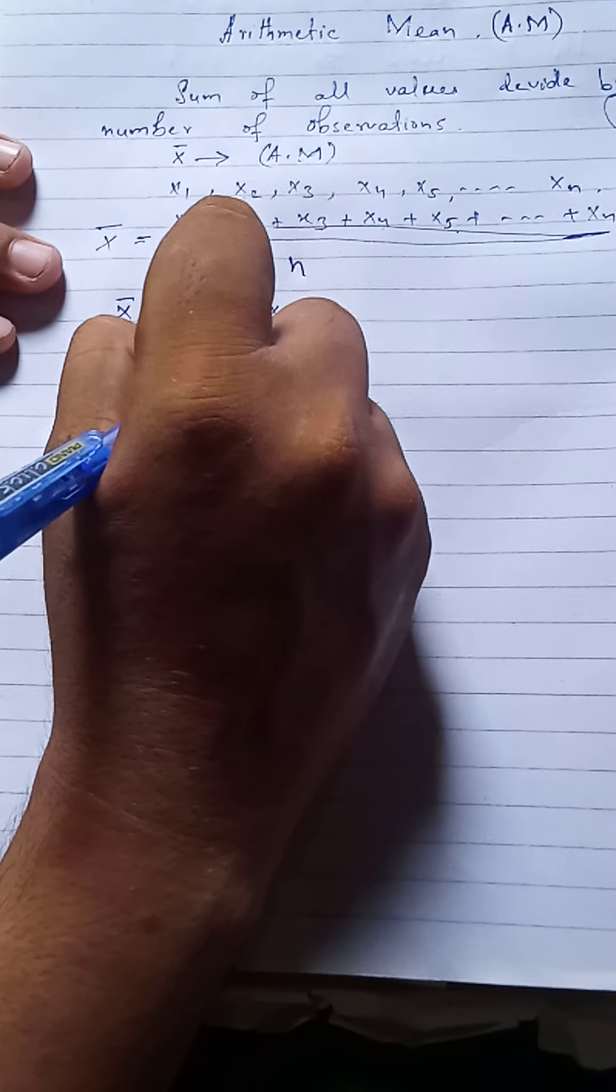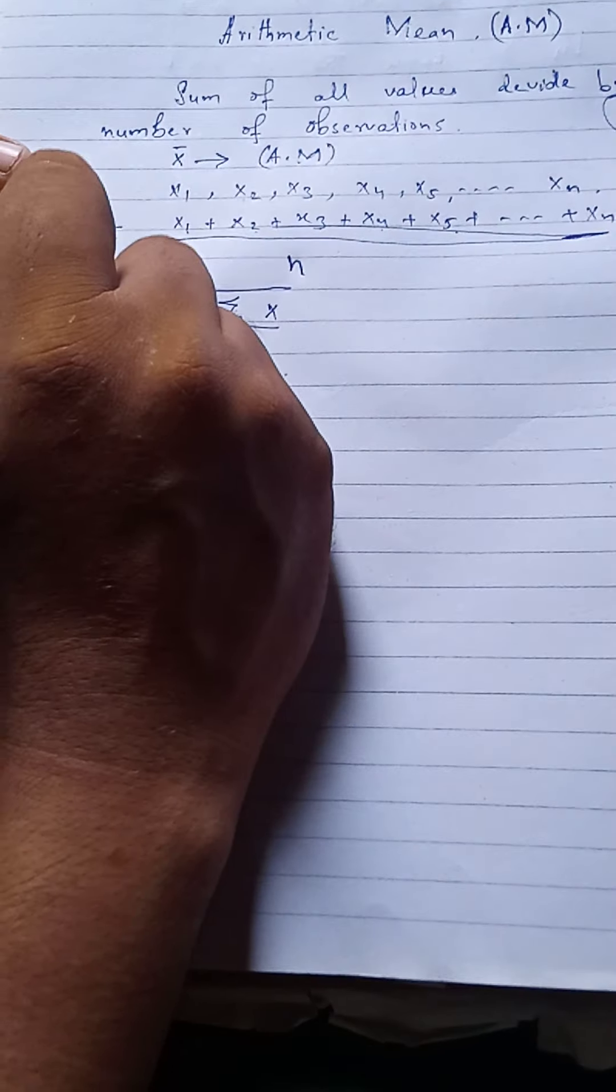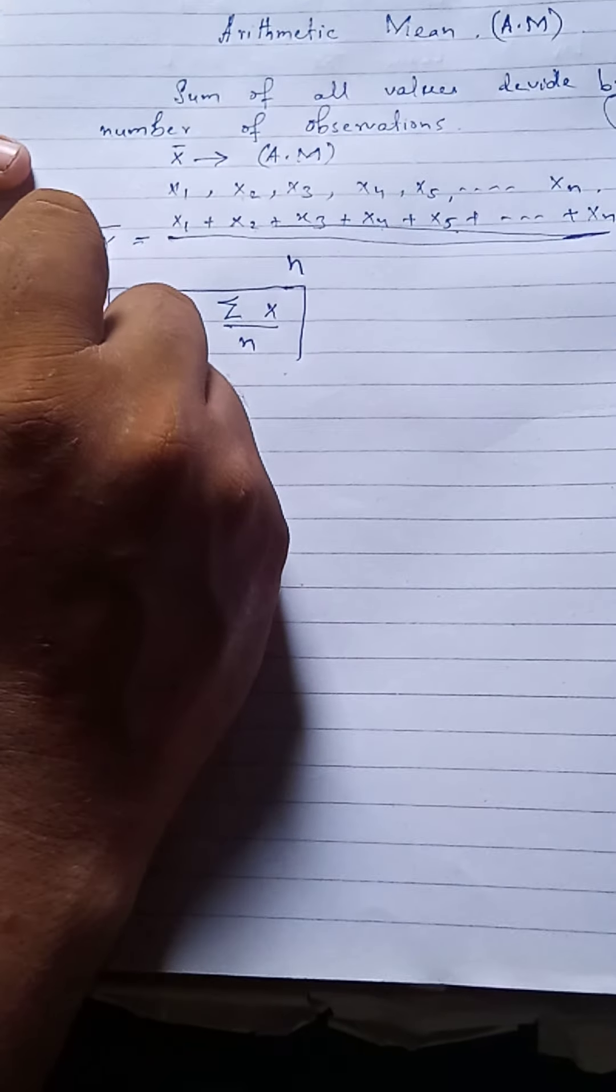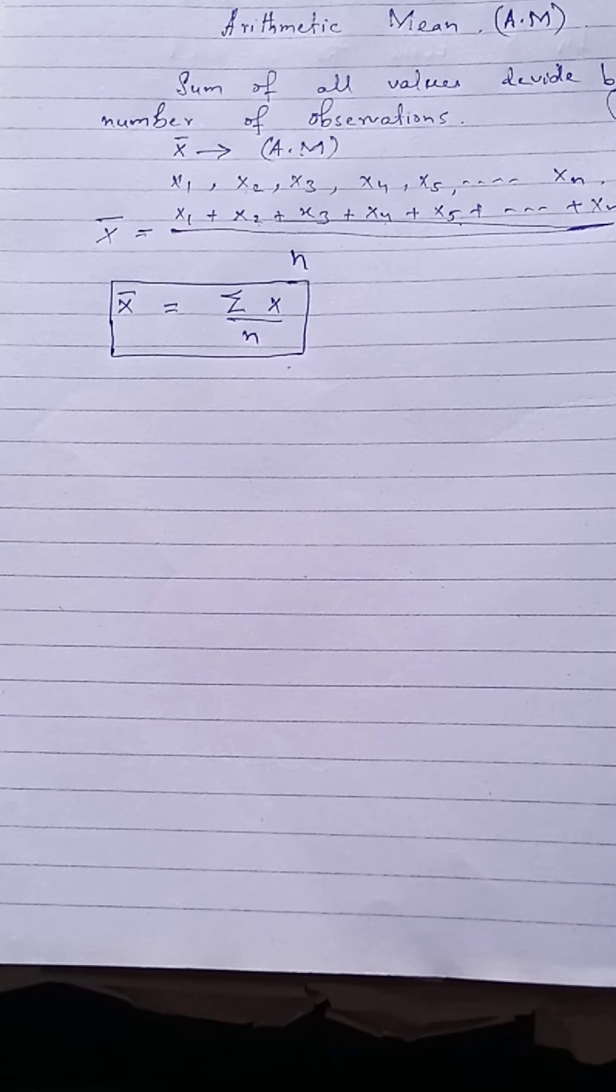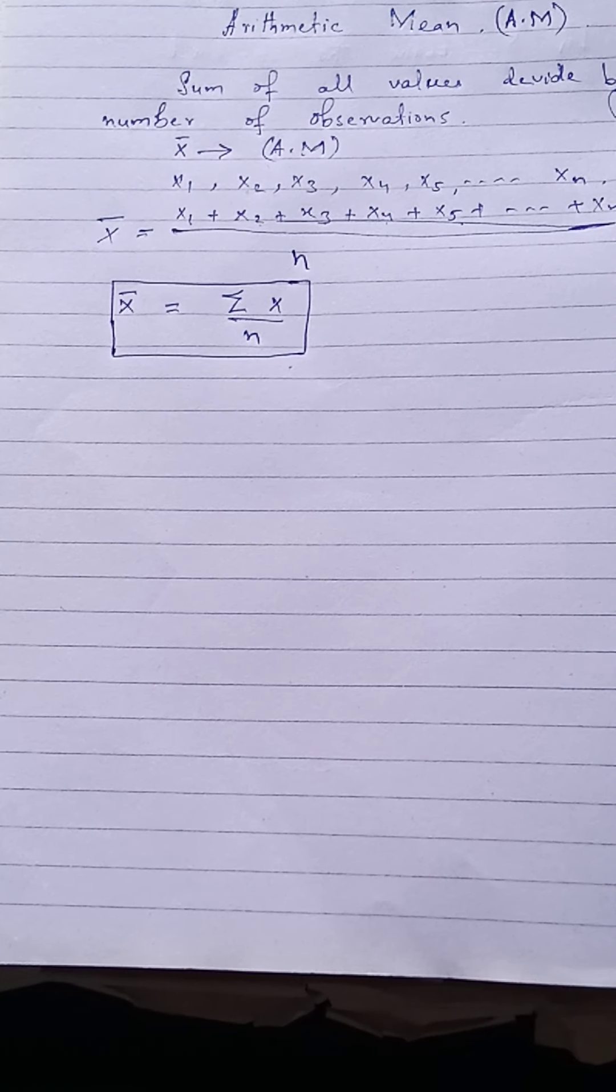Summation of x over n - यह इसको लिखेंगे। जितने भी numbers होंगे, variables होंगे, उन सब को add करके वो कितने numbers हैं उनसे divide करेंगे तो हमें arithmetic mean मिल जाएगी।